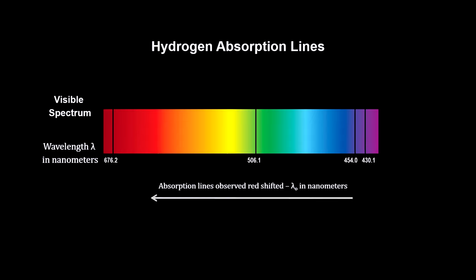And light from a receding star has its wavelengths lengthened. We see the lines shift to the red. They are said to be red shifted.